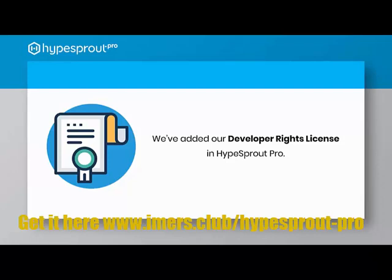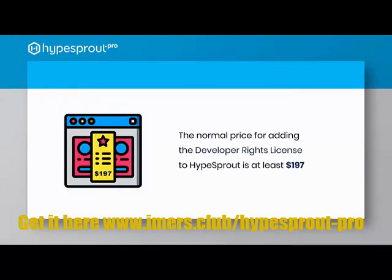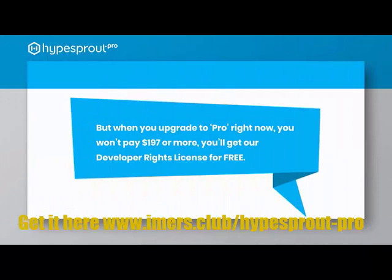Although the version of the software you just purchased is not set up to manage clients, we've added our developer rights to Hype Sprout Pro. The normal price for adding developer rights to Hype Sprout is at least $197, even though the real value is much higher when you consider how much money you can make with it. But when you upgrade to Pro right now, you won't pay $197 or more — you'll get our developer rights license for free.